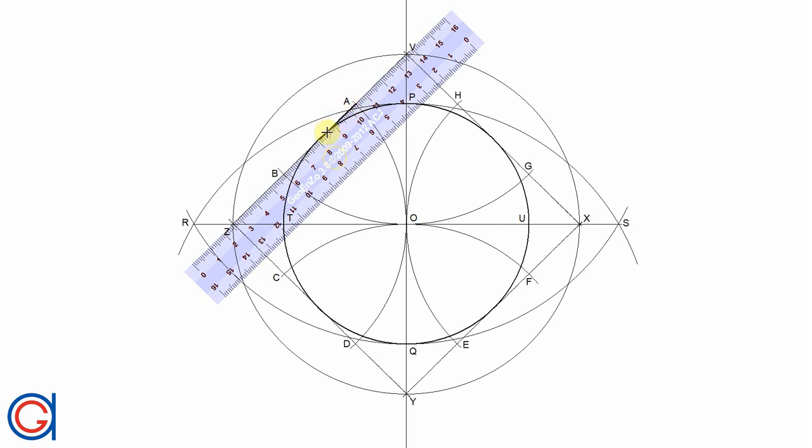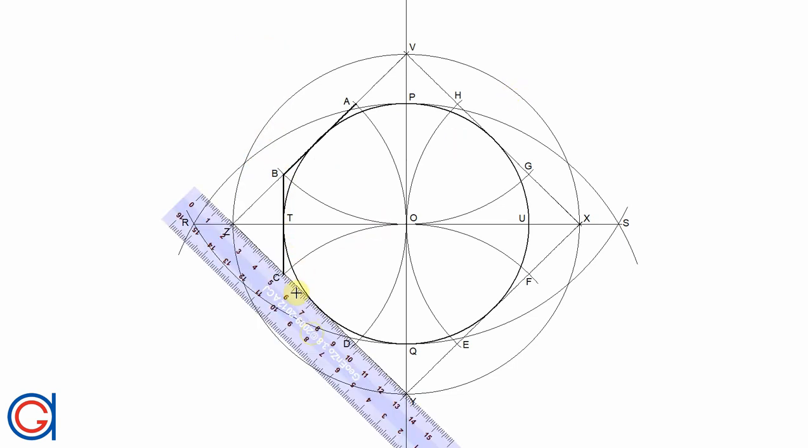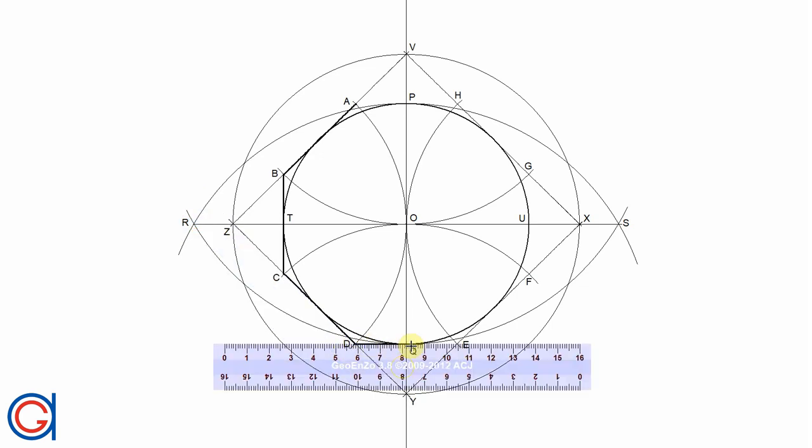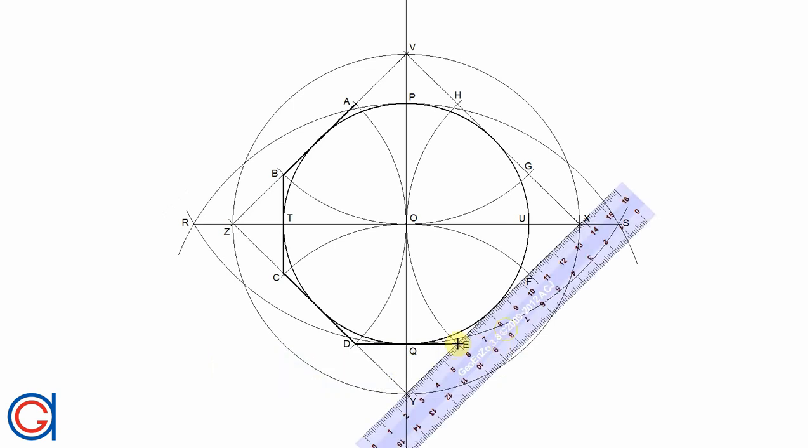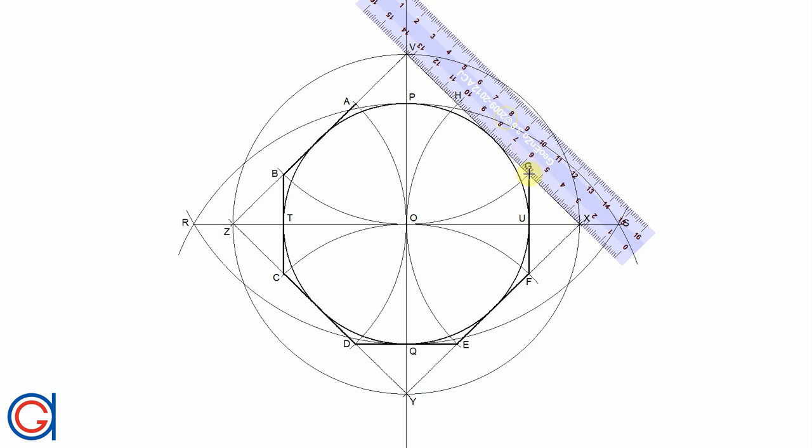So now getting our ruler and with a thicker line we are going to join all the vertices A to B, B to C, C to D, D to E, E to F, F to G, G to H, and finally H to A.